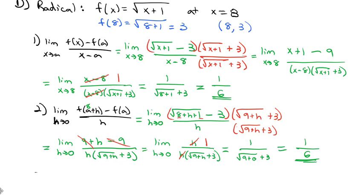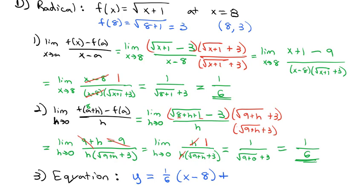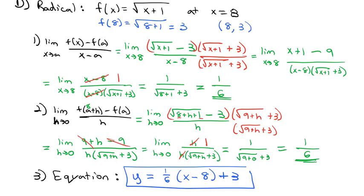So we're ready to write the equation of our tangent line at (8, 3): y = (1/6)(x − 8) + 3. That's how we find the equation of the tangent line at a point using one of these two formulas. The homework assignment tells you which formula to use for a given problem so you get practice with both. Once you find the slope, just plug it into the point-slope equation. Take a look at some problems, and we will see you in class.